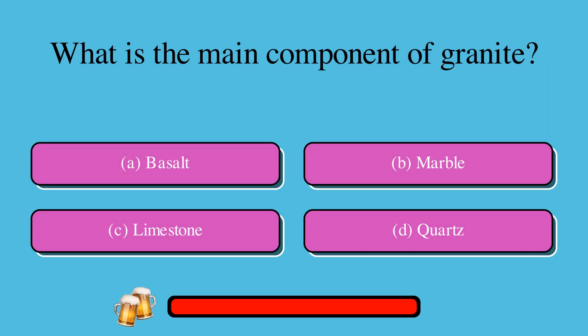What is the main component of granite? A. Basalt, or B. Marble, or C. Limestone, or D. Quartz? The correct answer is D. Quartz.